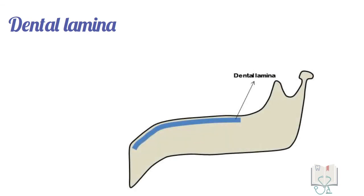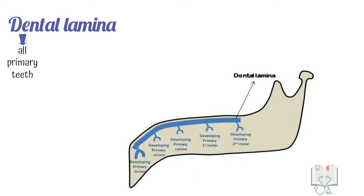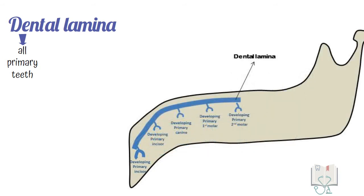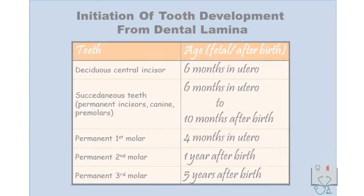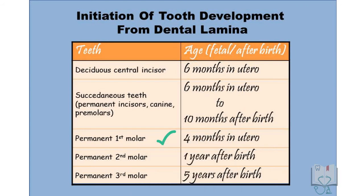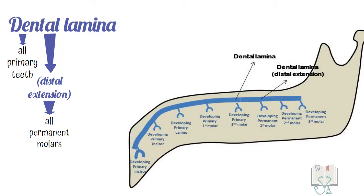The dental lamina shows increased cell multiplication in some areas and forms localized thickenings or placodes called the enamel organ. The dental lamina is the structure which gives rise to all the deciduous teeth. During the later part of development, as the jaw grows posteriorly, the dental lamina gives a distal extension from which the three permanent molars develop gradually. The development of the first molar is initiated at the fourth month of fetal age, the second molar at the first year after birth, and the third molar at five years of age.